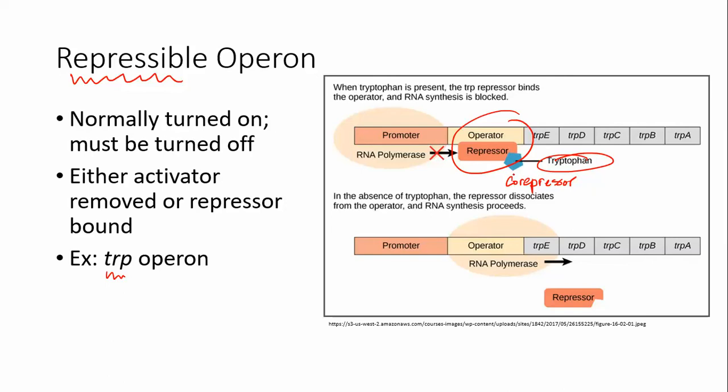So a repressible operon is turned off by certain circumstances. If you don't have tryptophan, that repressor has a different shape and is not able to bind to the operator, so you just have constant transcription of these sets of genes. It's a very good way to regulate which genes you have turned on and which genes you have turned off.